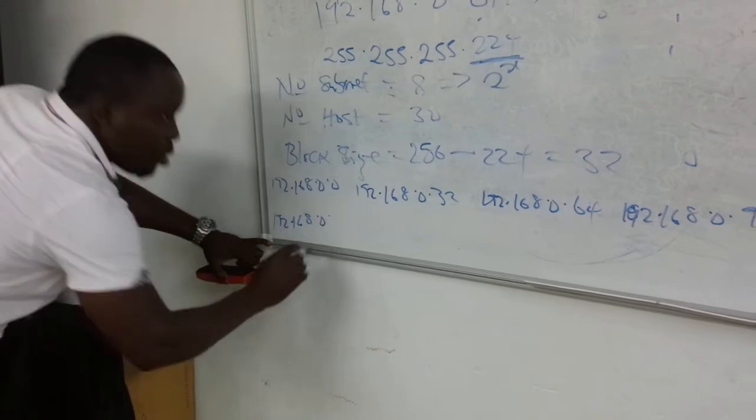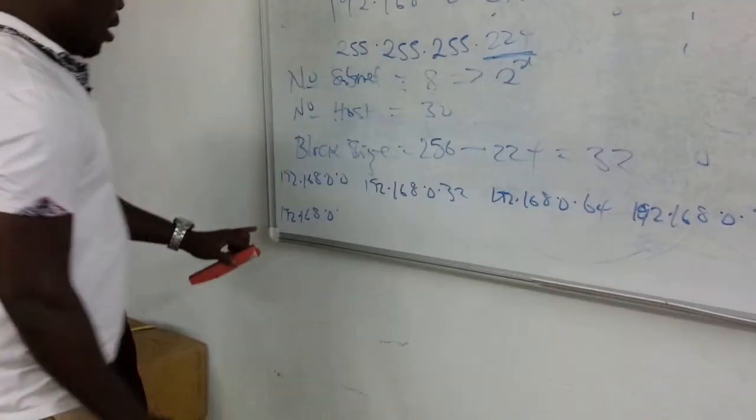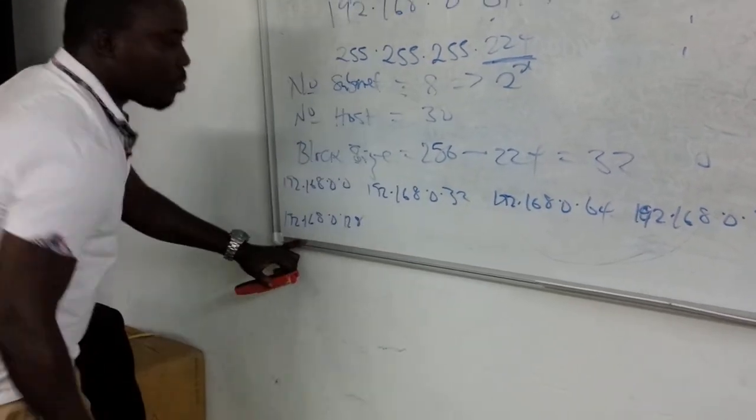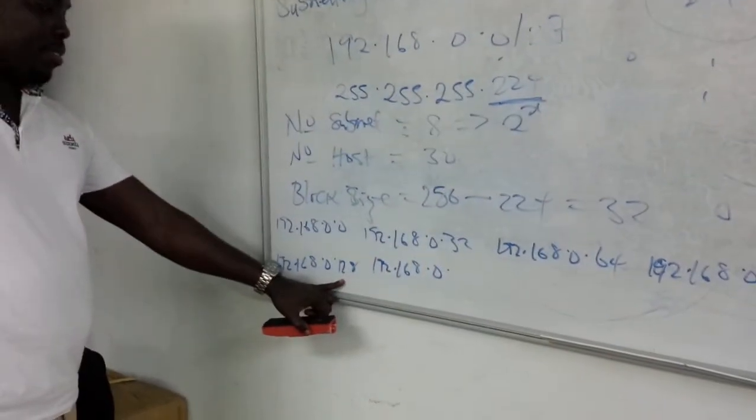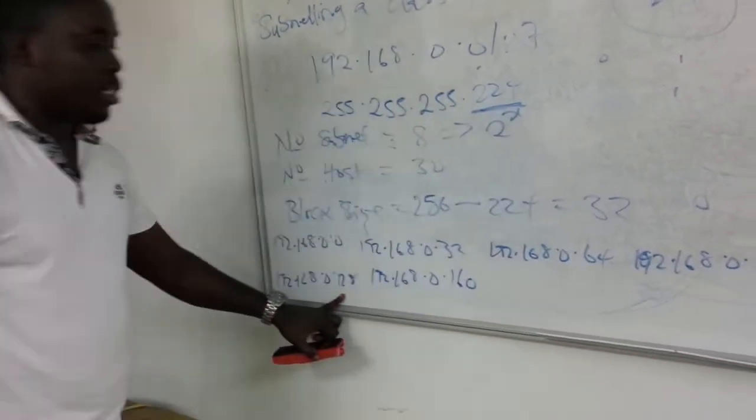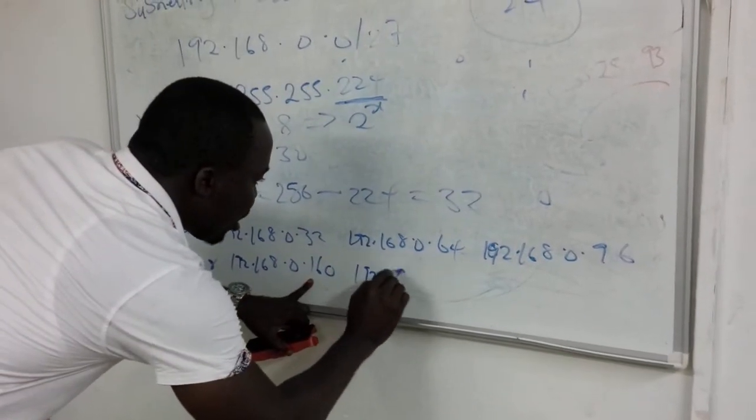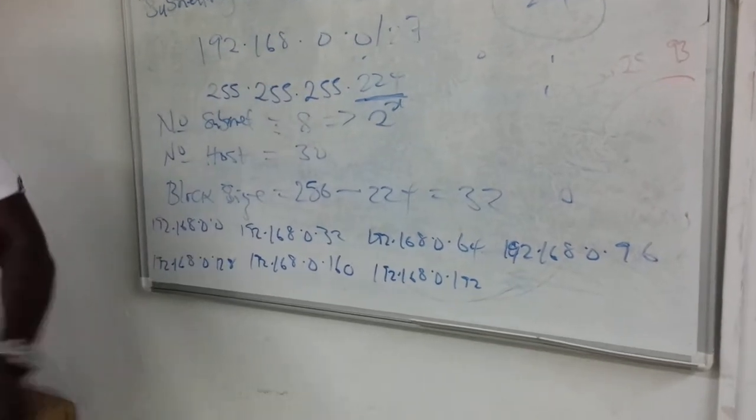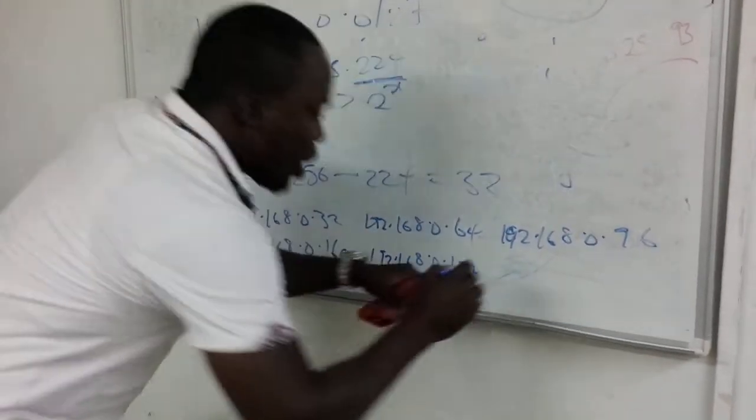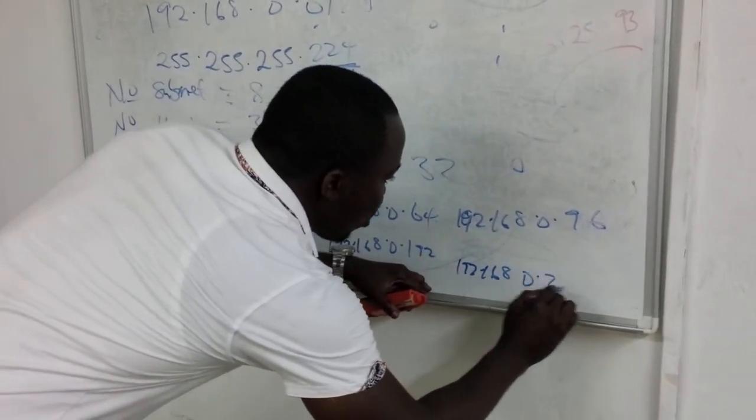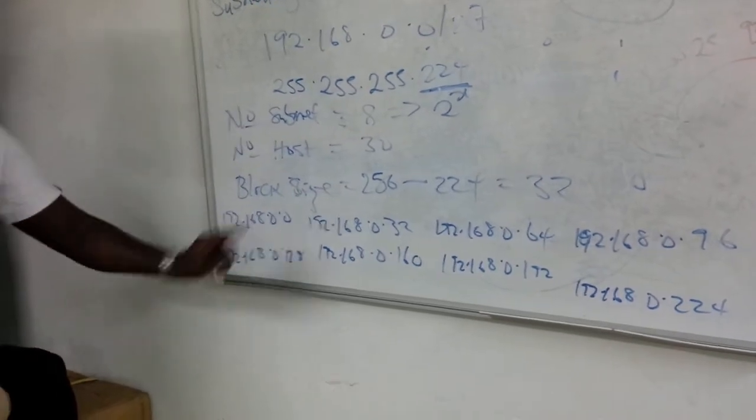Plus 32, now you have 192.168.0.64. Add 32 again, you get 192.168.0.96. Then 192.168.0.128. If we add 32 to 128, we have 160. Then 192.168.0.192. The last one, if we add 32 to 192, we get 192.168.0.224. So these are the networks we have: 1, 2, 3, 4, 5, 6, 7, 8.